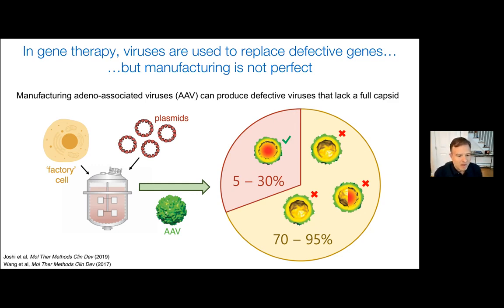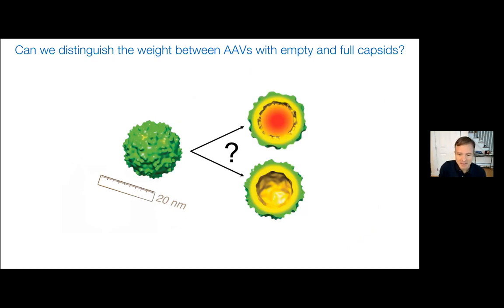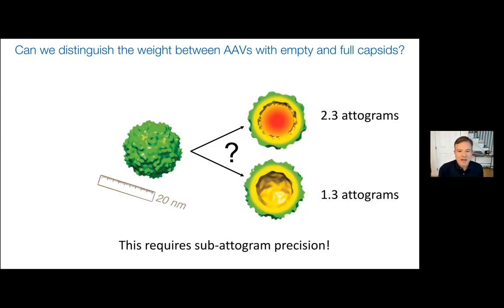One of the holy grails in the manufacturing field would be an inline tool able to quantify what fraction of viruses have full, complete, intact capsids and use that information in real time to control processing parameters in a closed loop system to optimize the product. From a size point of view, these viruses are the same whether they have the DNA inside or not. But from a mass point of view, they weigh a couple of attograms, and the difference between a full and empty capsid is about one attogram for the DNA inside.